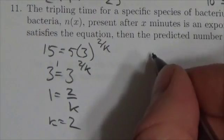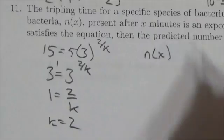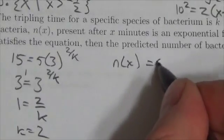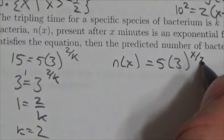Great. So now we can rewrite this equation. N of x is going to equal 5 times 3 to the x over 2.